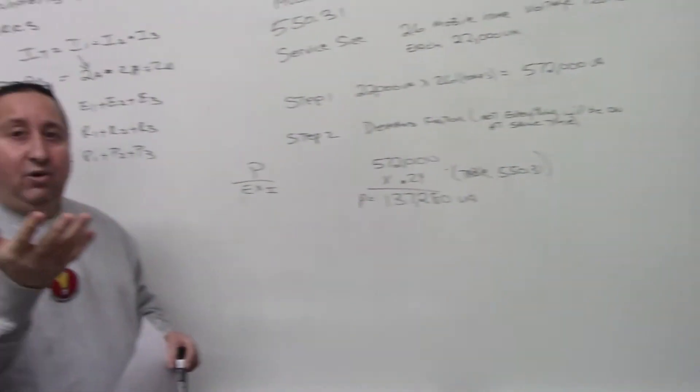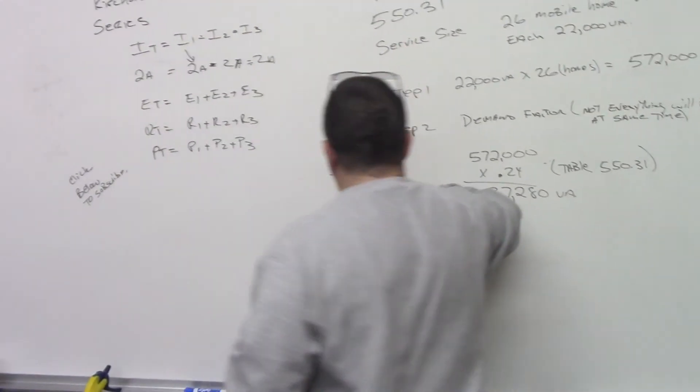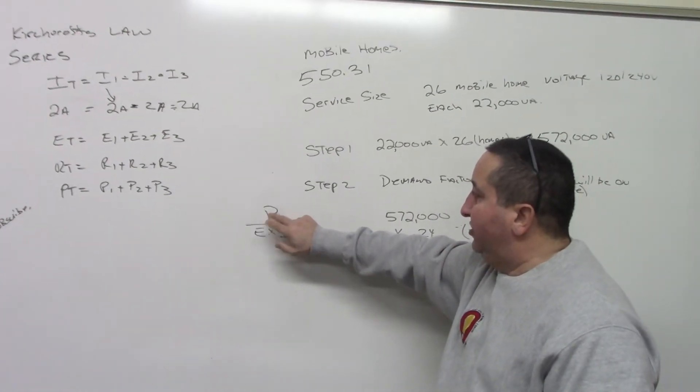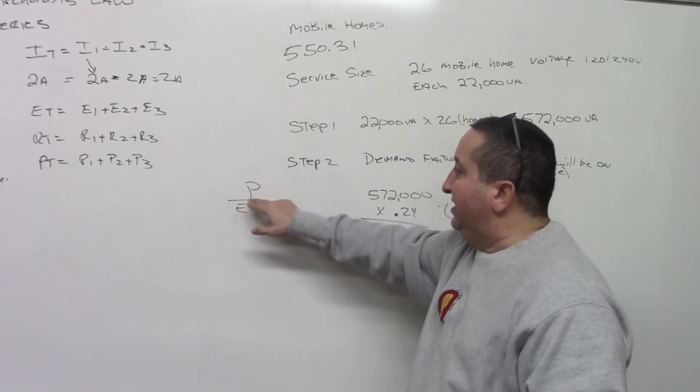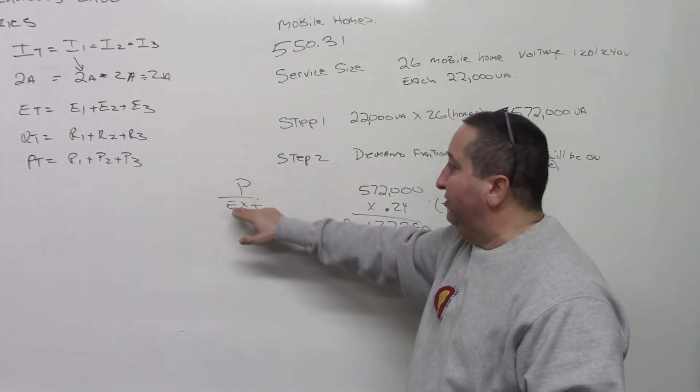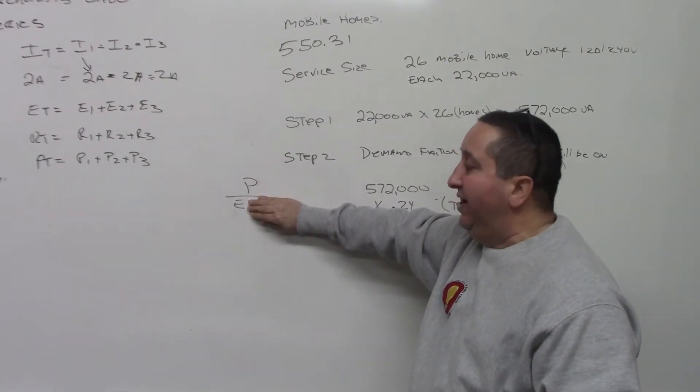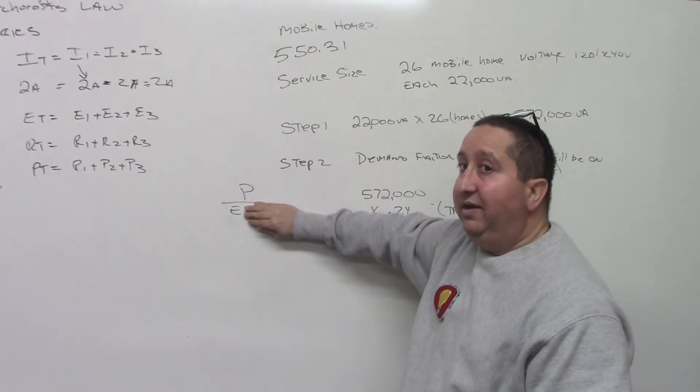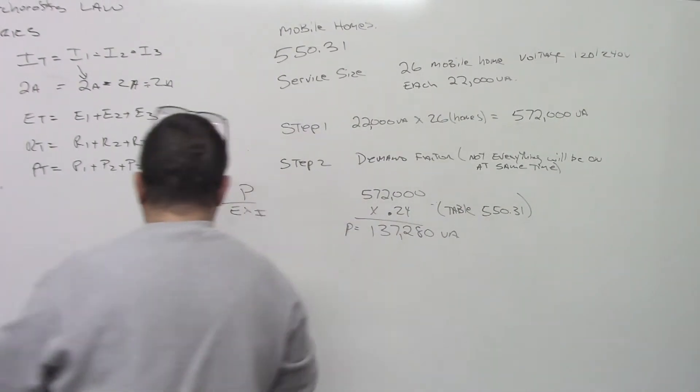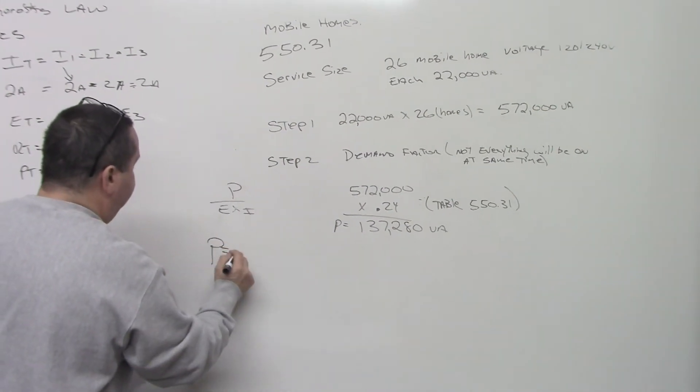So we're going to find it. We're going to cover I. So this P, this is a formula. P equals E times I. We're going to cover I. And now we make it an equation, which is P divided by E. Very simple.